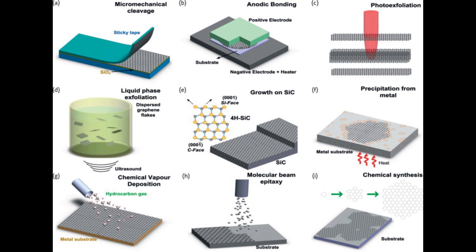Graphene, a single layer of carbon atoms arranged in a two-dimensional honeycomb lattice, has garnered significant attention due to its remarkable properties. There are several techniques for producing graphene, each with its advantages and limitations. Here are some of the most common graphene production methods.